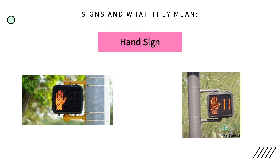Here is what a hand sign looks like. The hand sign means that you need to stop and wait on the sidewalk before crossing. When the hand sign is flashing with numbers, it is telling you how many more seconds you have to walk before it is unsafe to cross.